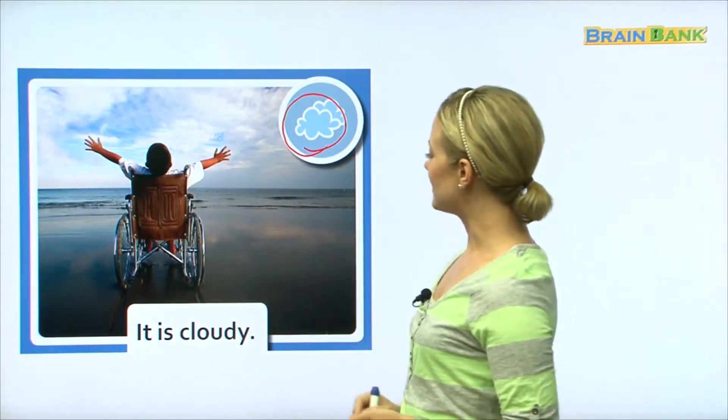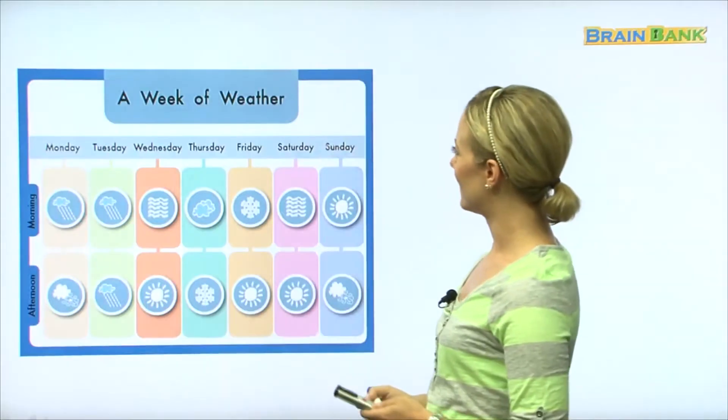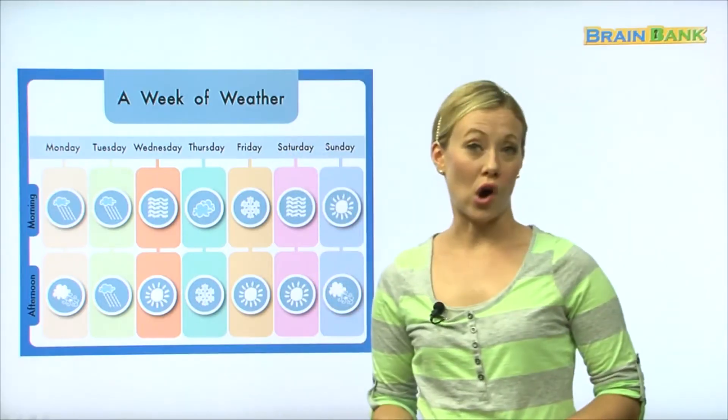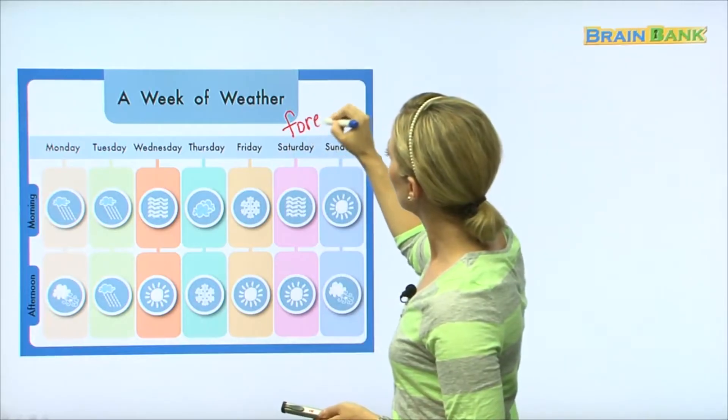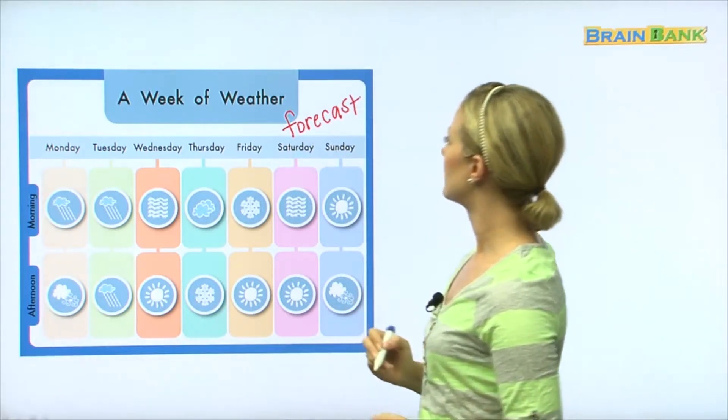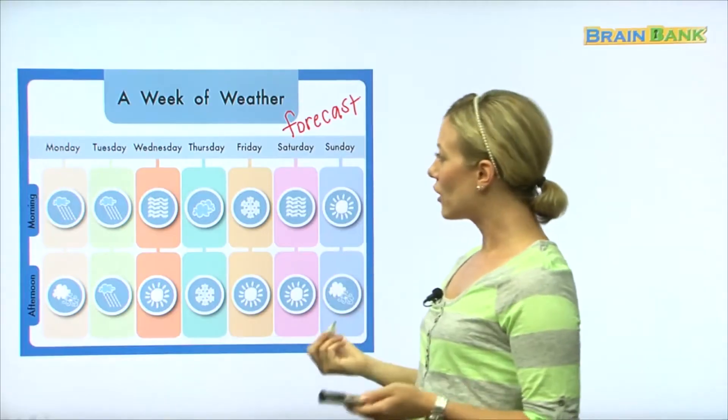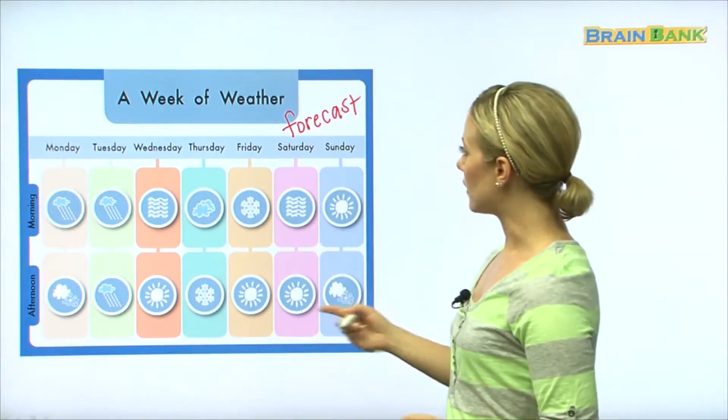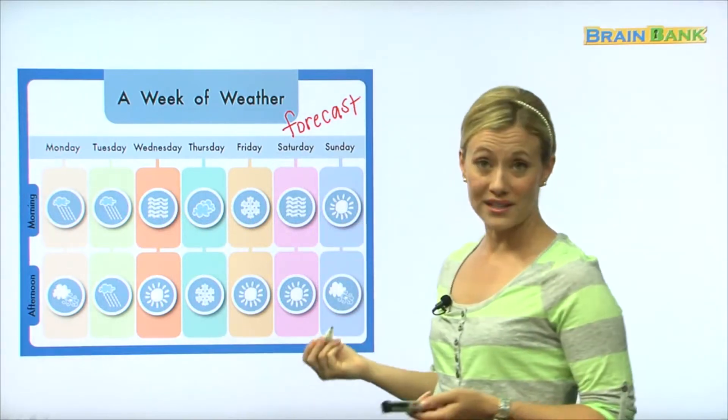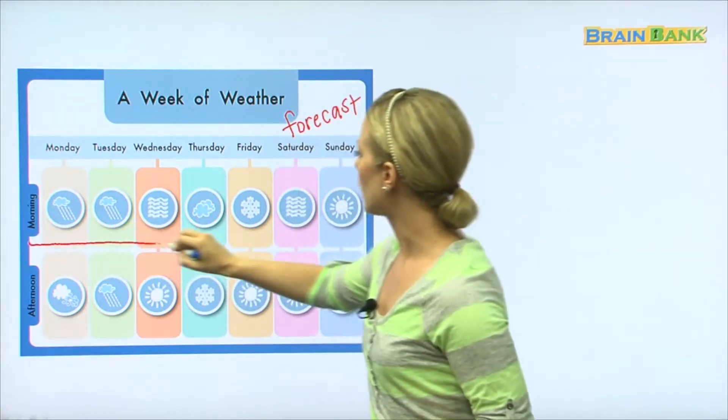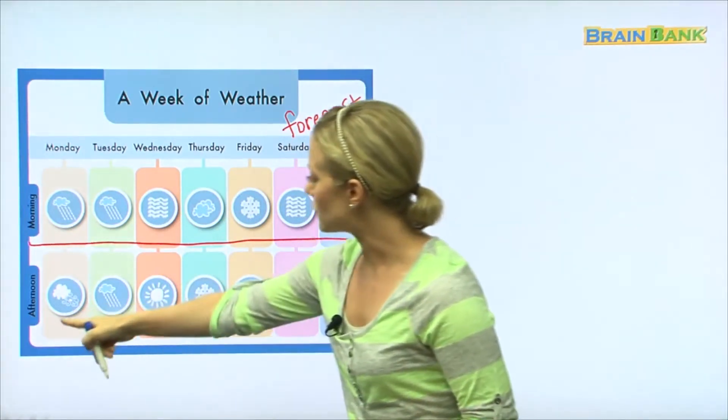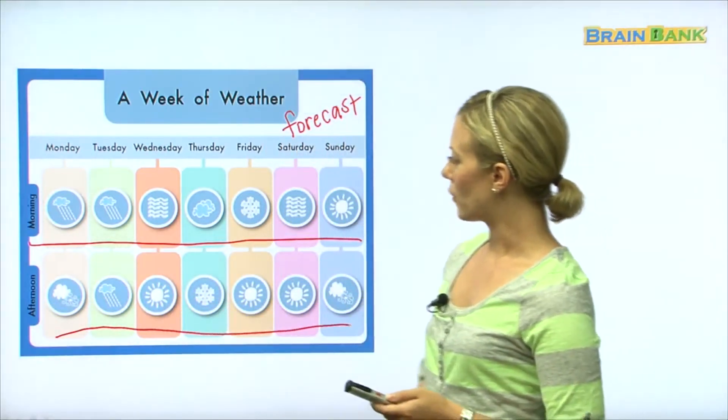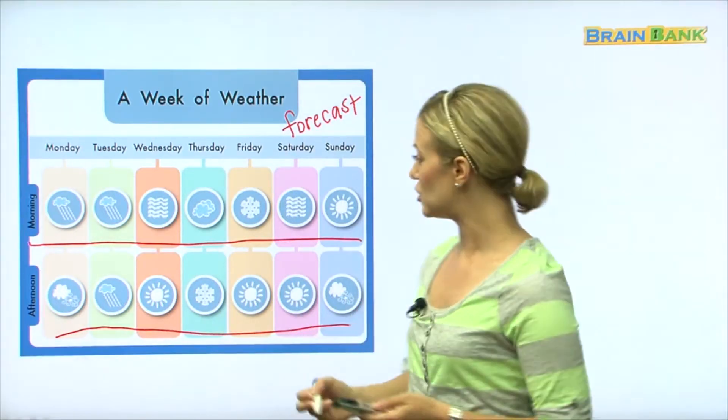Okay so now we have a week of weather. This is what we would call a weather forecast. A forecast tells us what the weather is going to be like on a certain day. So here we have the next week and it tells us what the weather is going to be like in the morning. So all of the top ones show the weather in the morning and all the bottom ones show the weather in the afternoon. Okay, so let's see if we can read some of these. Do you remember what this symbol is?